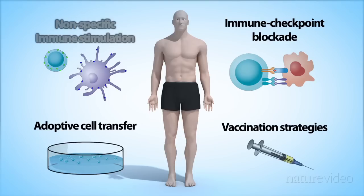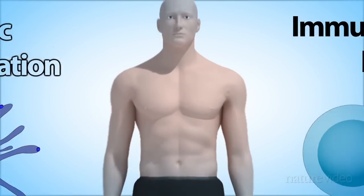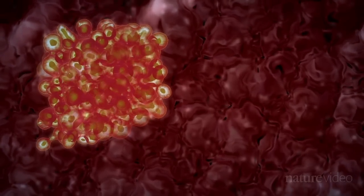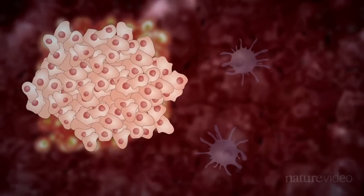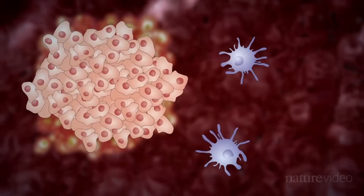The first, non-specific immune stimulation, is used to give a general boost to the immune system in vivo. To do this, some of the many cells that make up the immune system, such as these antigen-presenting cells, need to be activated.